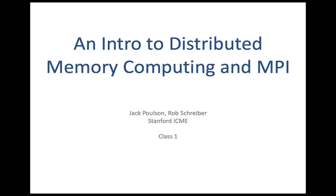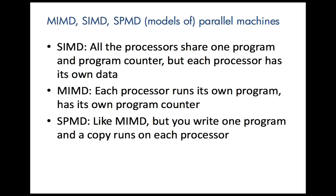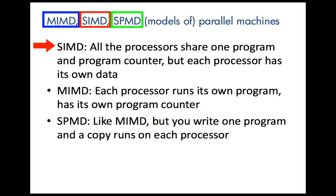Let's talk about different kinds of parallel computers. A classical distinction or taxonomy of parallel computers classifies them as MIMD, SIMD, or SPMD. SIMD stands for Single Instruction Multiple Data. In a SIMD machine, there's one program and one point of control. All the processors are at that same point in the one and only program at any time, but each processor works on its own data. A floating point add instruction, for example, causes every processor to add two numbers. This is a form of what's called data parallelism.